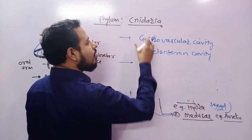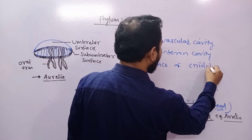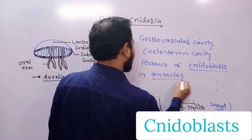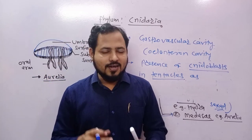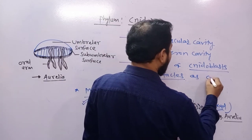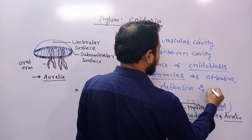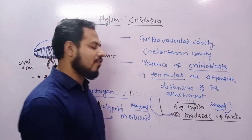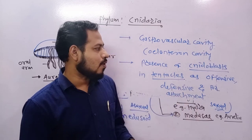The characteristic feature of these animals is the presence of nidoblasts or nidocytes in their tentacles. These are specialized stinging structures used for offense, defense, and attachment — so they are a multi-purpose structure. The animals protect themselves using these stinging cells called nidoblasts, which is why they are now called cnidarians.